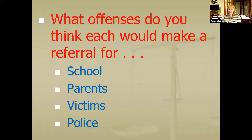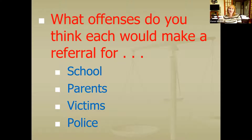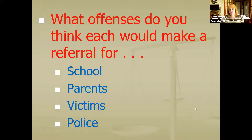What would be some offenses that each referral source could make a referral for? Remember, we talked about status offenses. A status offense could be truancy — not going to school — so maybe a school makes a referral to the juvenile justice system because of truancy, or it could be violence, drug use, or something in the schools. Parents might refer because they can't control their child — out past curfew, not following the rules. Victims could make referrals for actual crimes where they're a victim. And police could refer for any of these. The source may refer for different things, but some sources are probably going to refer for different offenses.